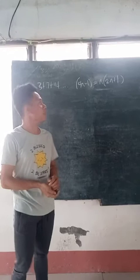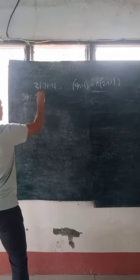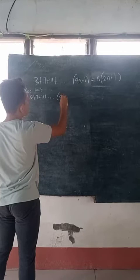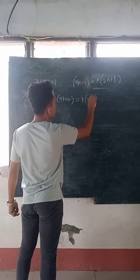So now we will see if the n-th term is equal to n times 2n plus 1. Assuming that n is equal to k: so 3 plus 7 plus 11 plus 4k minus 1, because our n is changed to k, is equal to k times 2k plus 1.